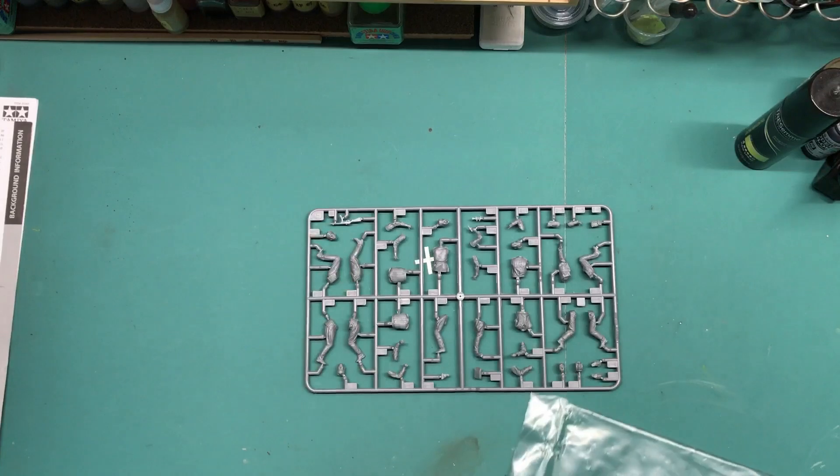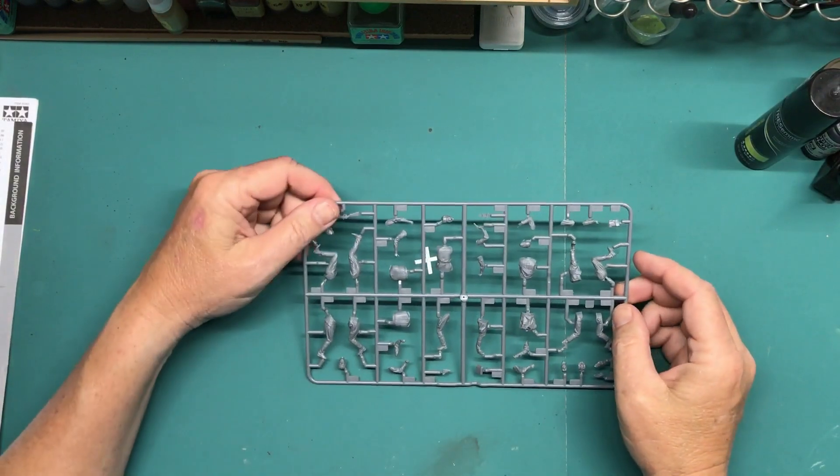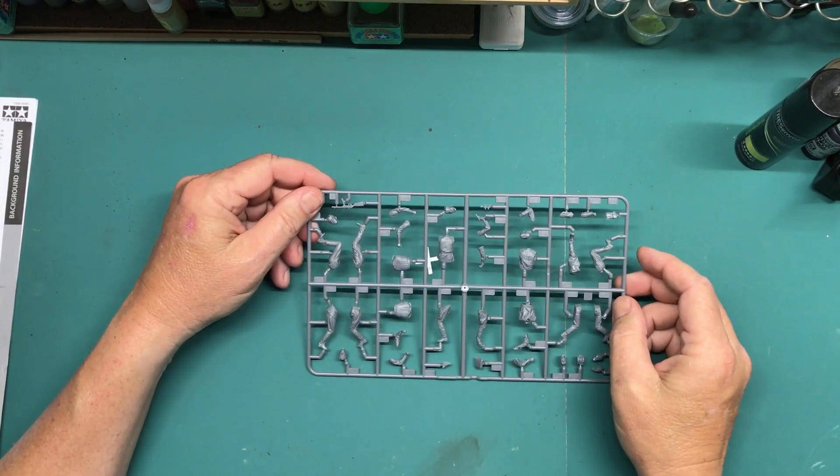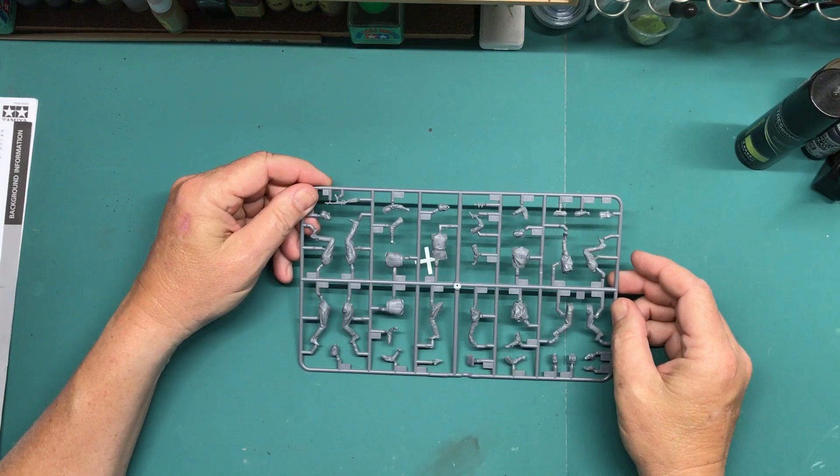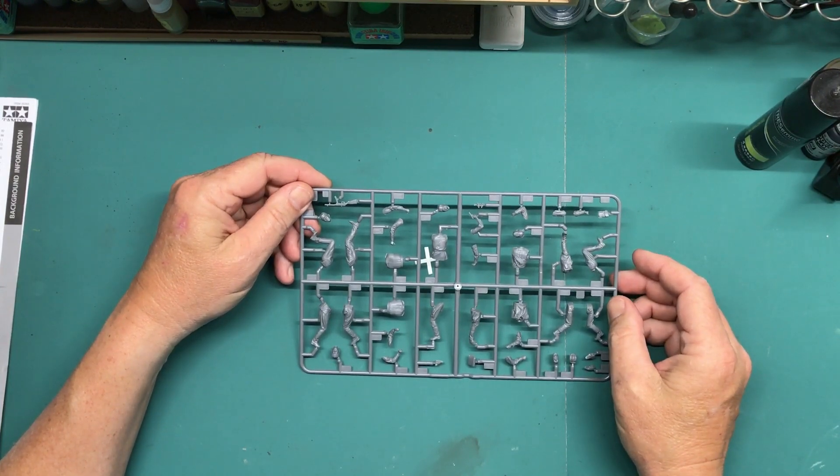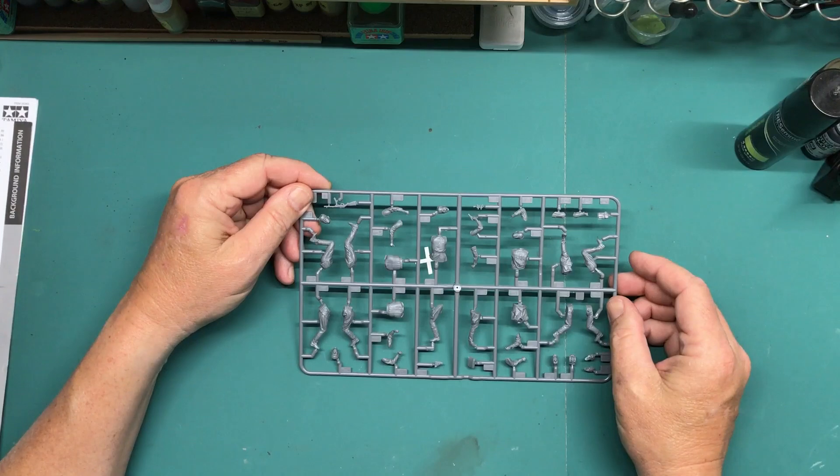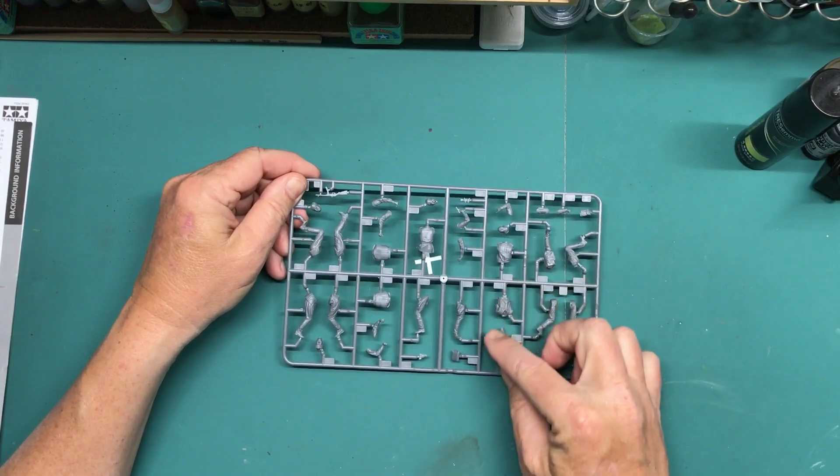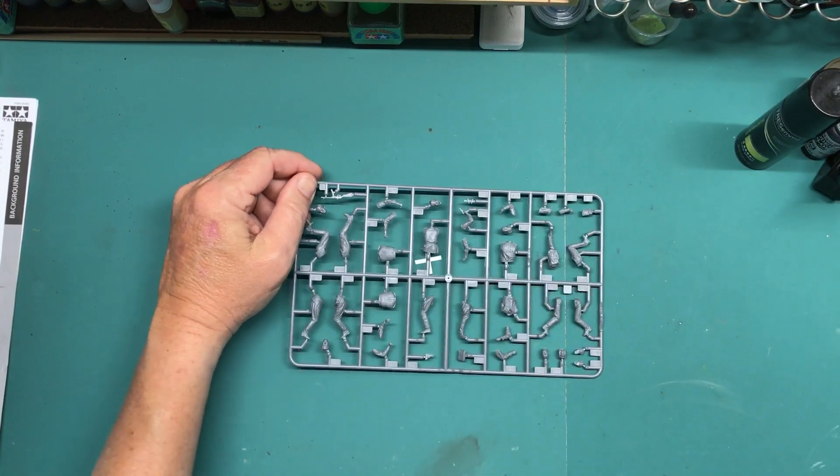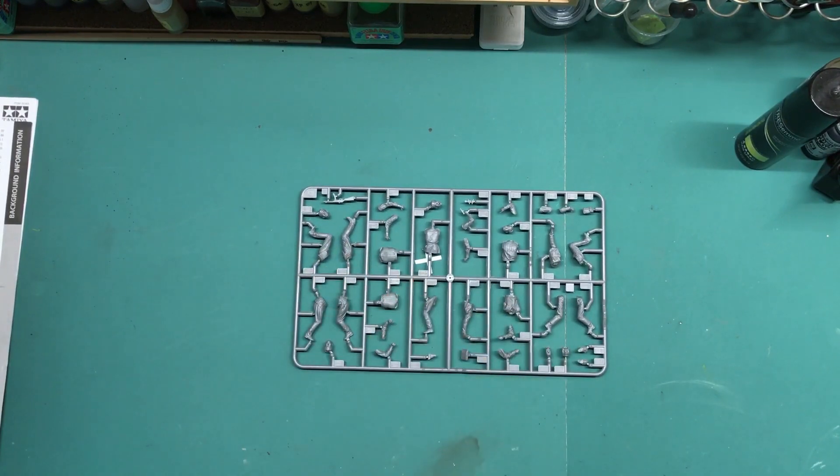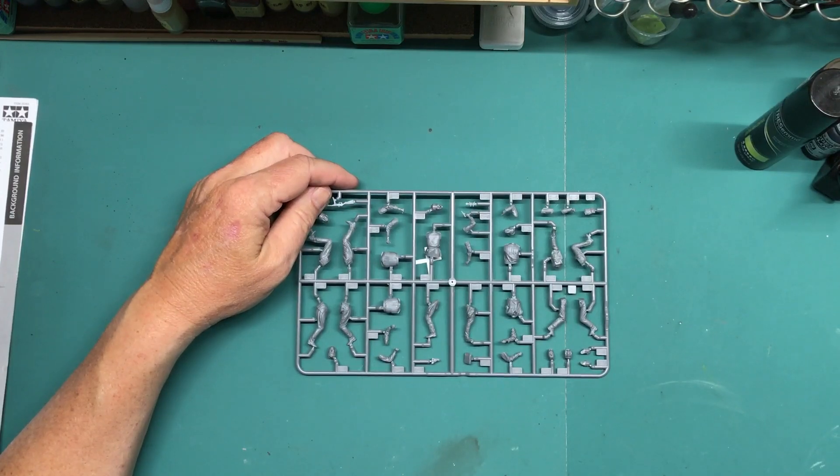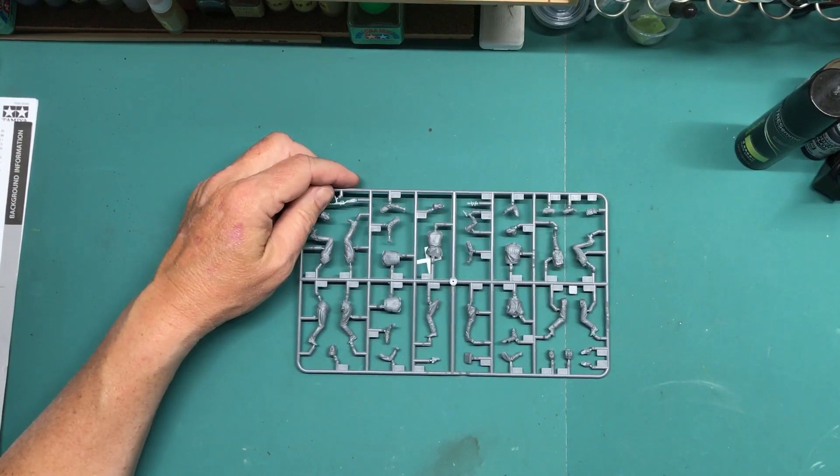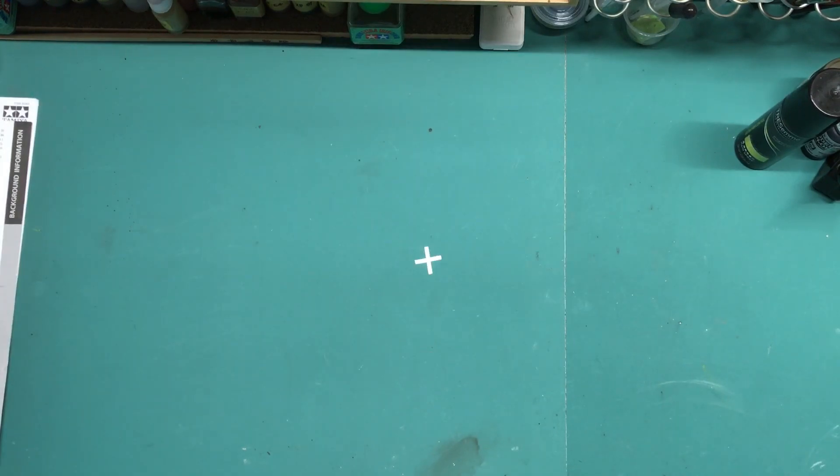And lastly we have the figure sprue. Now I think what I am going to do is incorporate the driver into the actual build of the vehicle, just to do one figure. So I think that is figure E, which is these parts. So we'll focus just on one guy and then we'll paint him. It should be fairly simple because he's just wearing a black leather or black uniform, armored soldier uniform or something. But we'll get into that later. So that's all the parts.